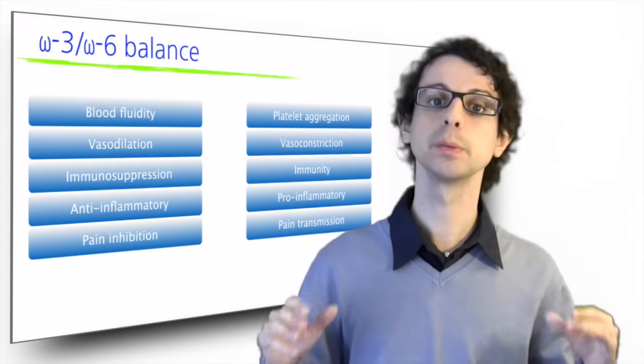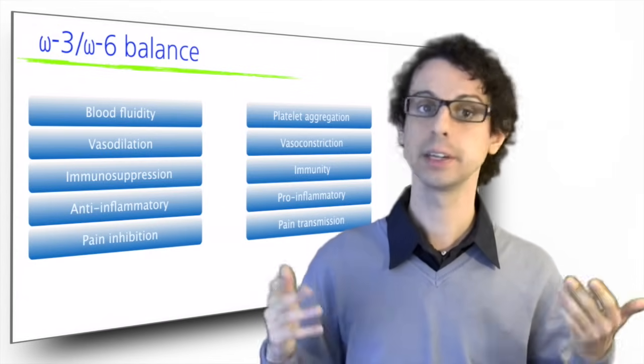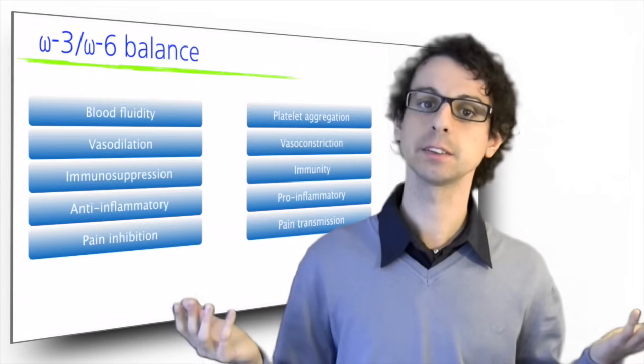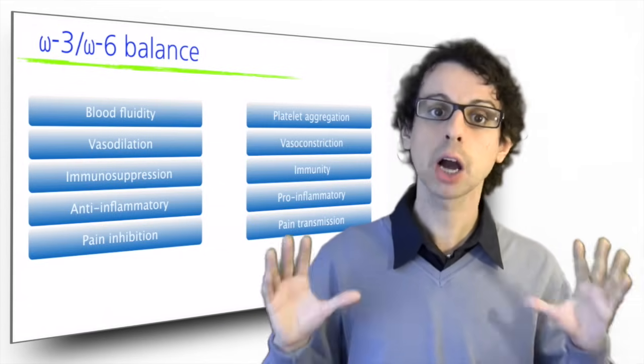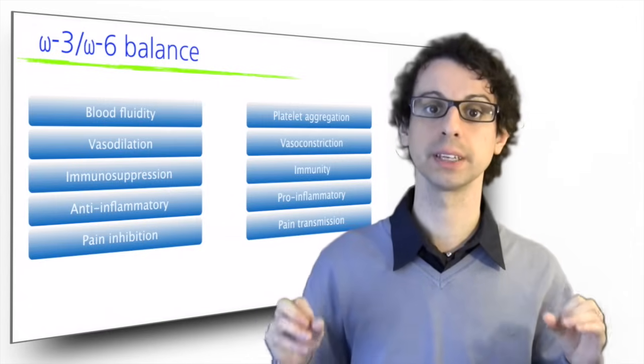Some eicosanoids promote pain transmission, others suppress it. Nobody likes to suffer, and the reason we take aspirin when our head aches is precisely to block the production of these pain-promoting eicosanoids.